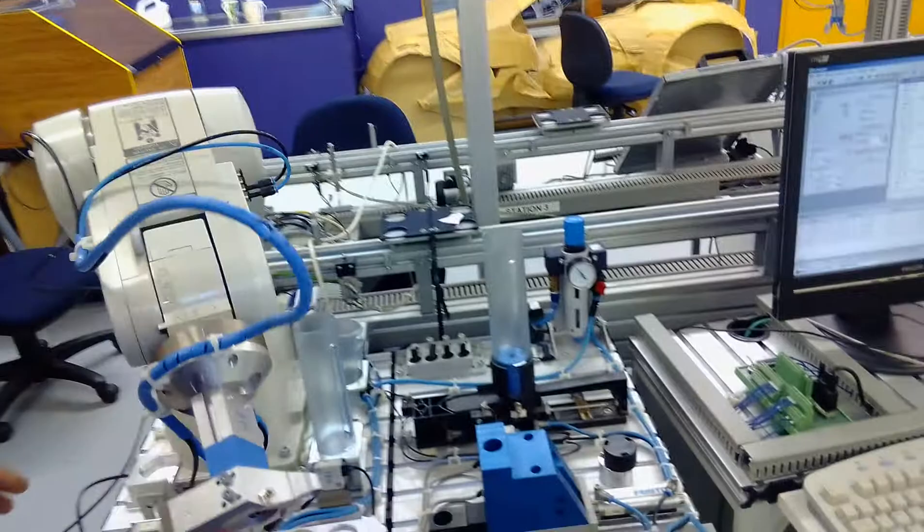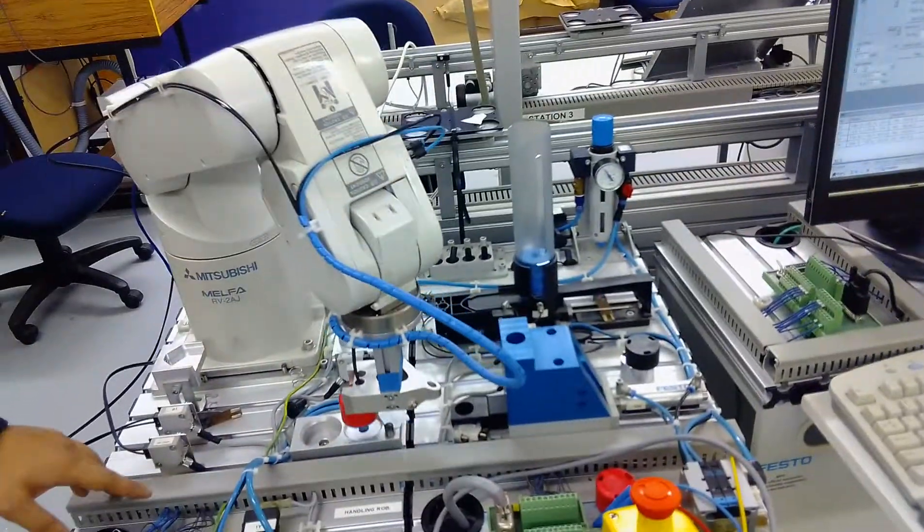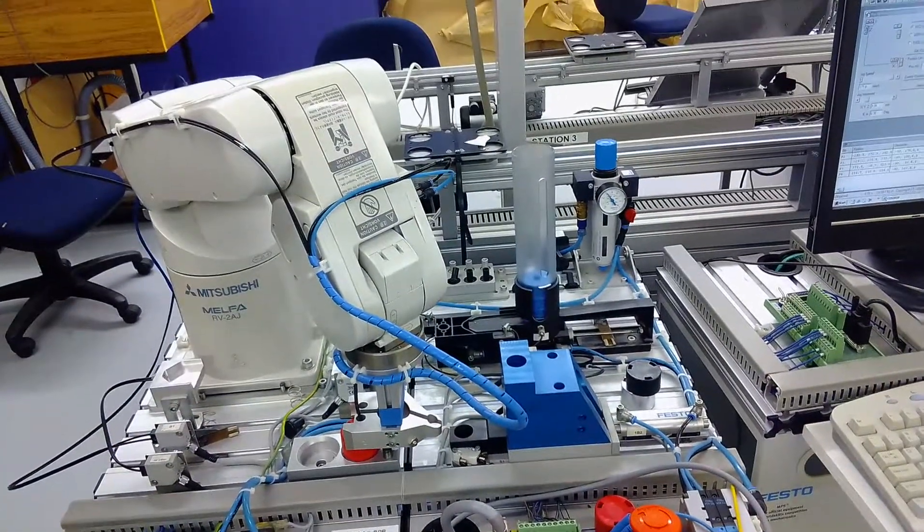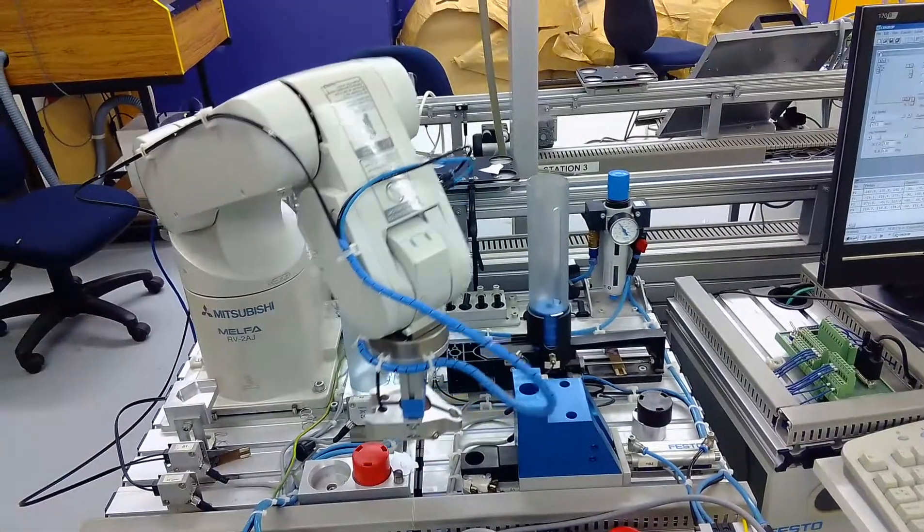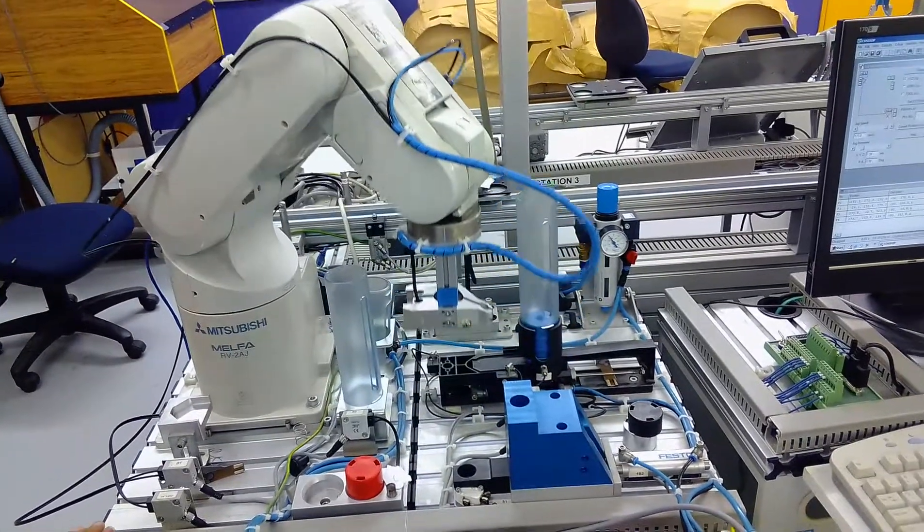Now it will travel to position C to place the disc. The speed is limited. Now the robot goes back to position H.